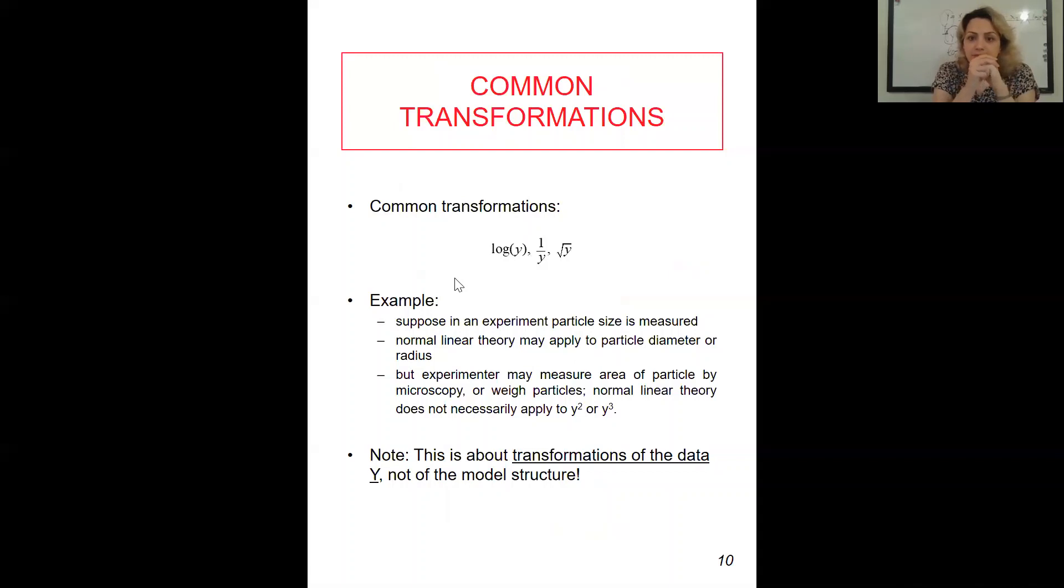For example, suppose in an experiment, particle size is measured. Normal linear theory may apply to particle diameter or radius. But experimenter may measure area of particle by microscopy or weight particles. Normal linear theory does not necessarily apply to y square or the area that you would have for your particle. It depends on how you would consider it, what's the shape of the particle that you consider.